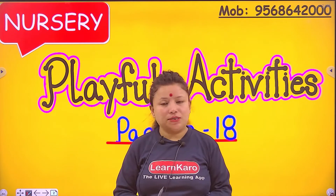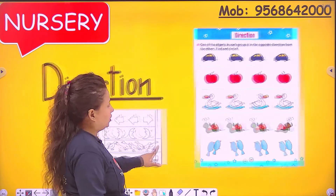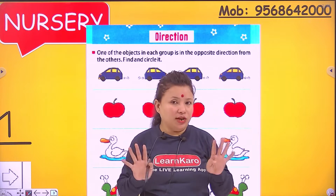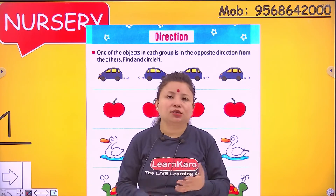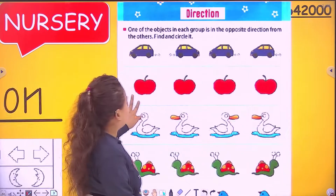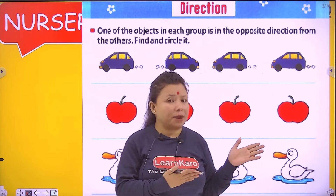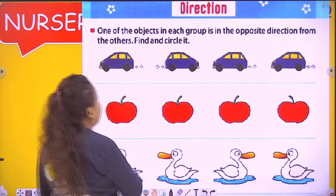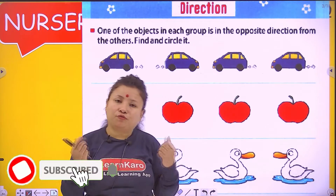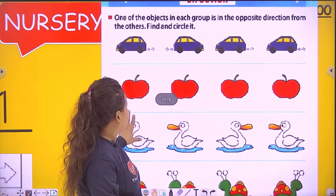So today my concept is about direction — page number 18 of your playful activity. Direction. As you know, there are four directions: East, West, North, South. In this picture there are some objects which are going in the same direction, but one object in each group is in the opposite direction from others. So we have to find it and then circle it.